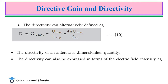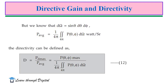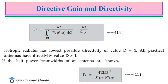Directivity can also be expressed in terms of electric field intensity: D = 4π E_max² / (∬ E(θ, φ)² sin θ dθ dφ). The average power density P_average is defined as (1/4π) ∬ P(θ, φ) sin θ dθ dφ, integrating with respect to angular coordinates θ from 0 to π and φ from 0 to 2π. Directivity can then be defined as D = Pd_max / P_average = P(θ,φ)_max / [(1/4π) ∬ P(θ,φ) dΩ]. Rearranging all terms, we get D = 4π / Ω_A, where Ω_A is the beam area.